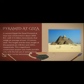Pyramid at Giza. In ancient Egypt, the Great Pyramid at Giza was constructed in about 2600 BC with 2.3 million stone blocks that weighed an average of 1.5 tons each. The height and base length of the pyramid are 146.6 m and 230 m respectively. This efficient construction project was made possible only with the full use of astronomical and other survey technology.